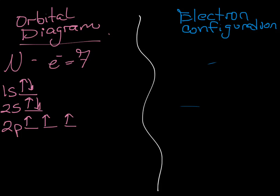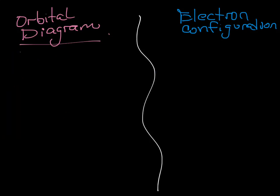So now to write the electron configuration, we're going to have one S two, two S two, and two P three. So there is the electron configuration for nitrogen. Last one. Let's try oxygen. This time, if you could do me a favor, hit pause. Try to do the whole thing by yourself. Hit play. See how you did.